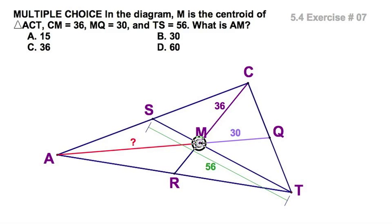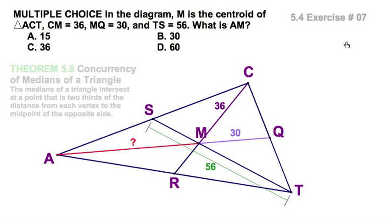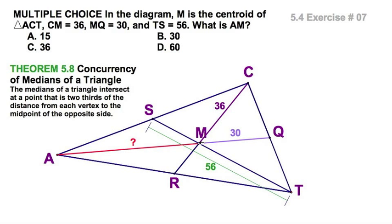Wow! Look at this triangle. M is the centroid. And I'm giving a bunch of information. CM, 36. MQ is 30. And TS, 56. We want to know what is AM, the red segment here. Well, to be honest, this one, this one, distractions. All we need is right here. If you remember the theorem we just talked about with our concurrency, M is two-thirds the distance from the vertex to the midpoint of the opposite side. Think of it this way. Two parts to one part. Two to one. So AM must be choice D, 60.